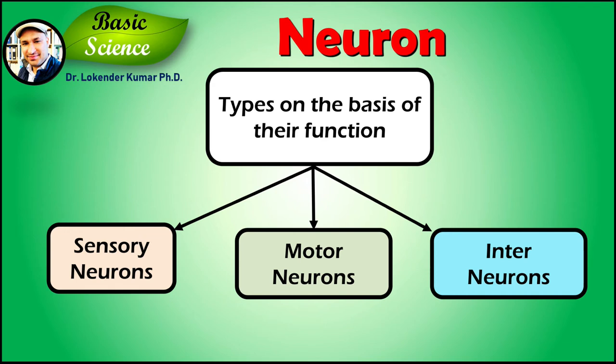Now let's classify neurons on the basis of their functions. Neurons are normally classified into three different types based on their function: sensory neurons, motor neurons and interneurons.